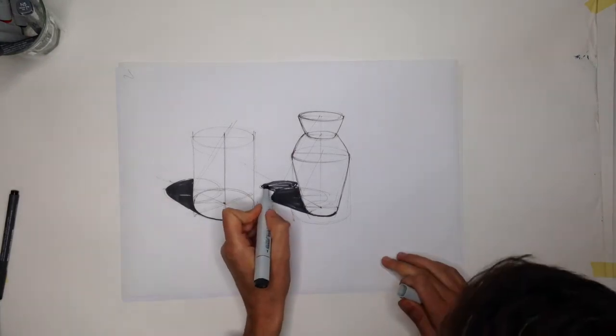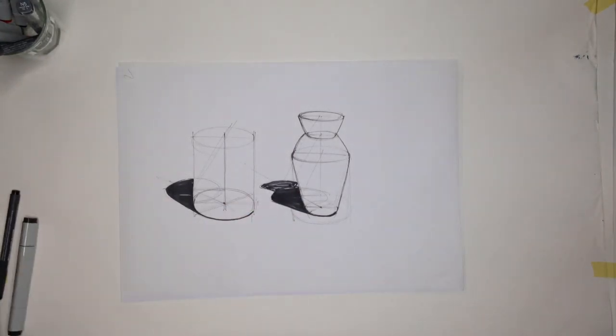Okay, so that's basically it. Shading on a standing vertical cylinder, a cast shadow for a vertical cylinder. Thank you.